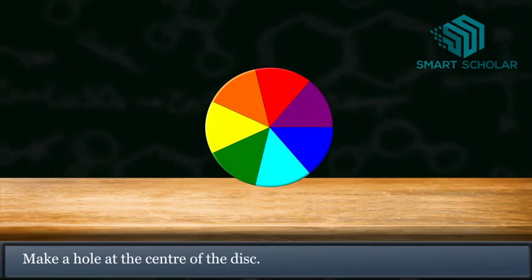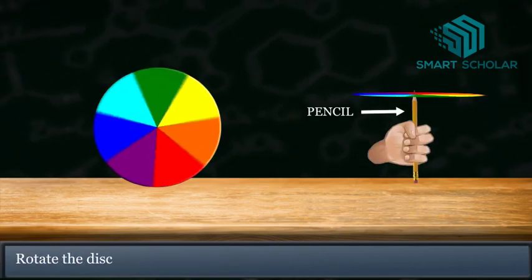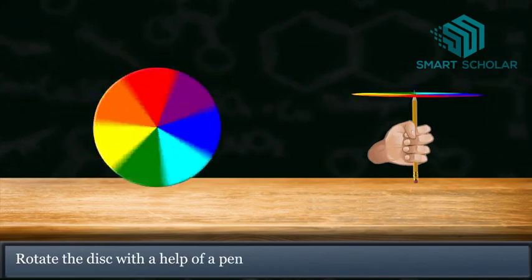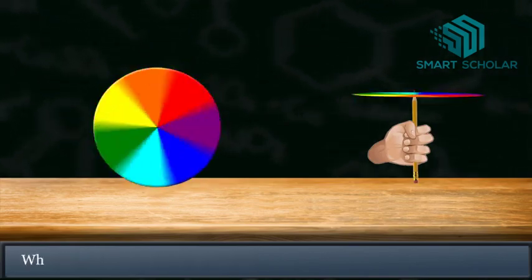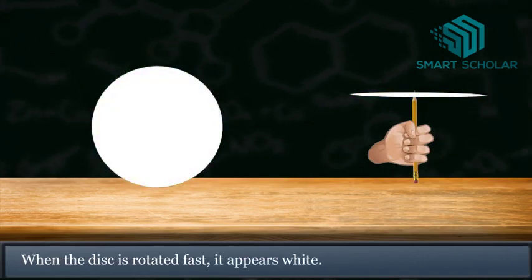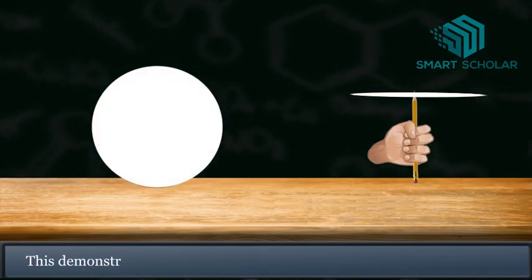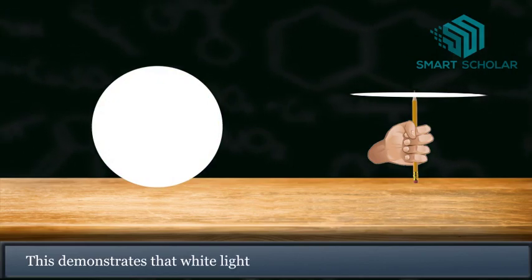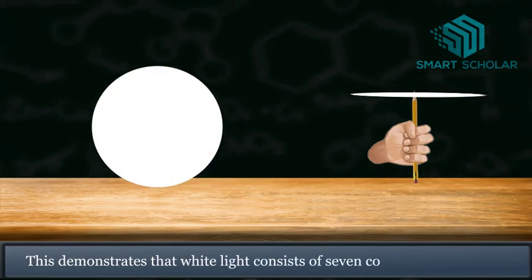Rotate the disc with the help of a pencil. When the disc is rotated fast, it appears white. This demonstrates that white light consists of seven colors.